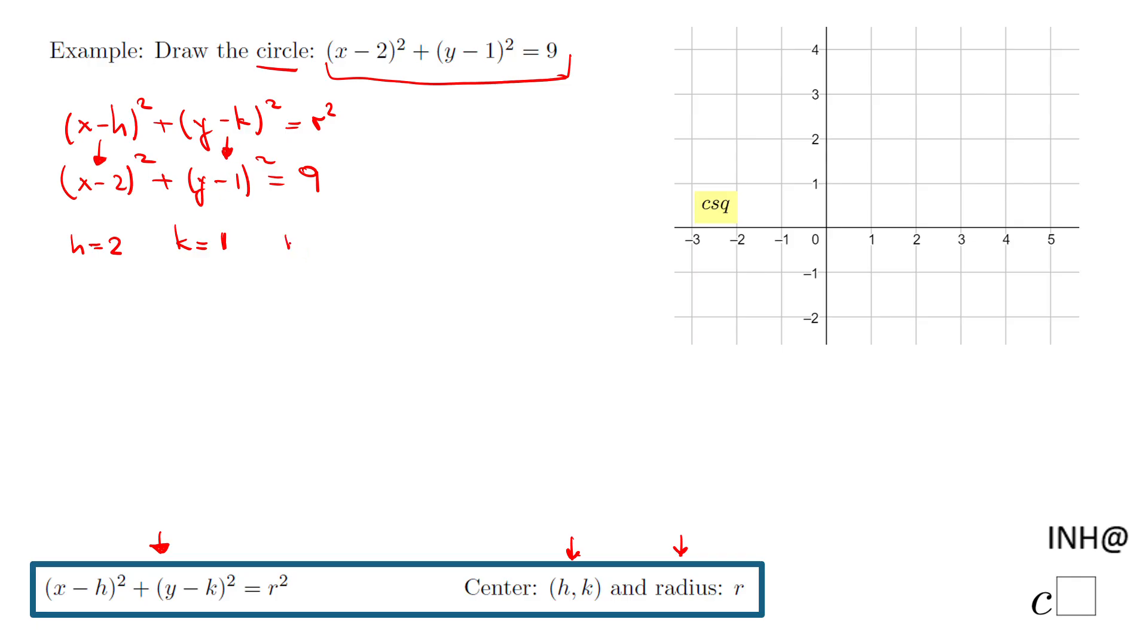And then r² will be 9. But how do I find r if I have r²? A simple way: you can think what number raised to the second power is 9, or simply take the square root, and that will be 3. So we have a circle that has the center at (2, 1) and the radius is 3.